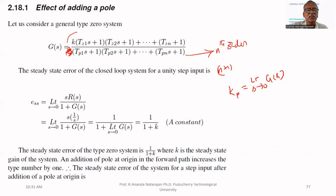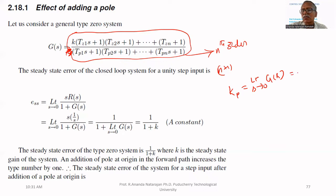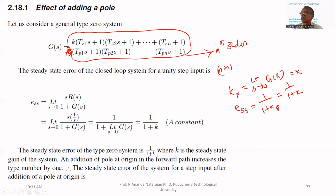For a type zero system, if you put s equal to zero, kp equals k. The steady state error for a type zero system for a step input is 1/(1+kp), which equals 1/(1+k). So for a type zero system, steady state error will be present.